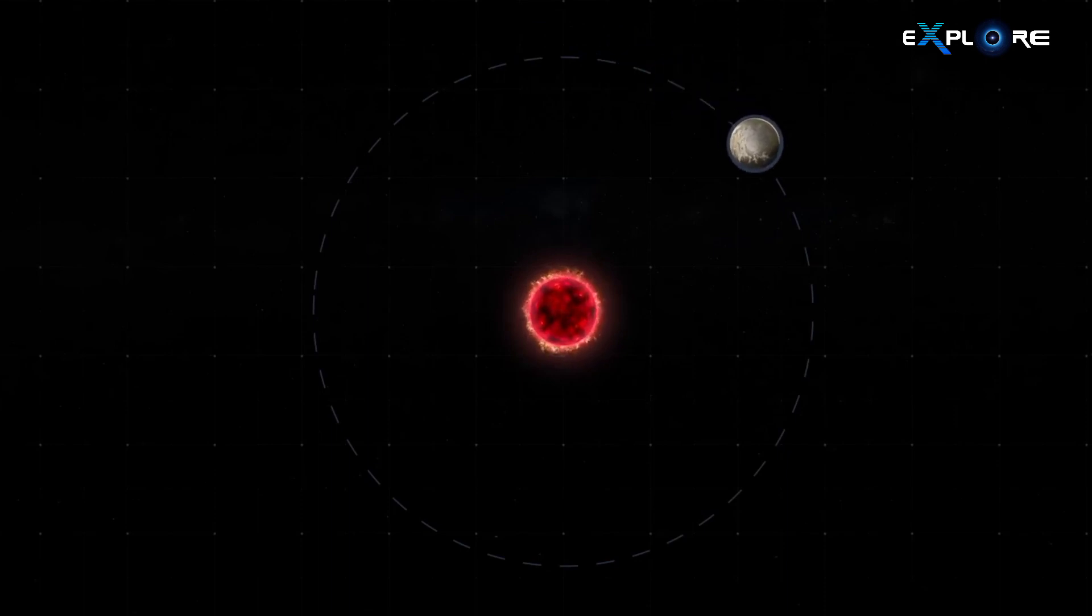Proxima B experiences a peculiar phenomenon known as tidal locking, where one side permanently faces its star while the other remains in perpetual darkness. This setup creates extreme temperature variations.